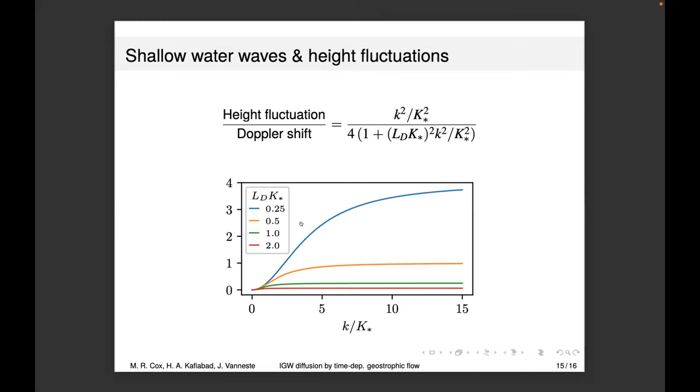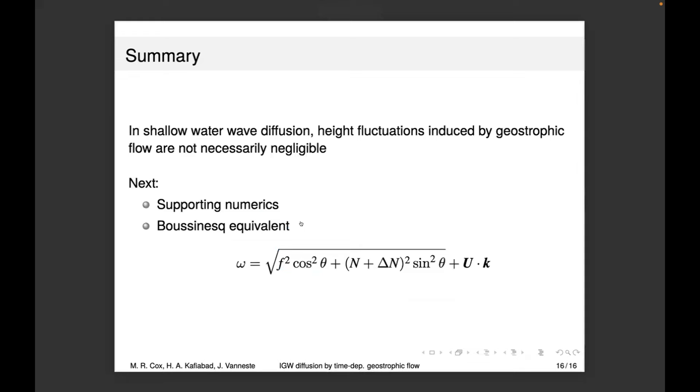The ratio of height fluctuations to Doppler shift terms is about a quarter, meaning the Doppler shift is more dominant but not by orders of magnitude. The height fluctuation term is probably not negligible and needs to be taken into account. At lower values of LD K star, this ratio grows; at higher values, it decays. The key takeaway is that in shallow water wave diffusion, height fluctuations induced by geostrophic flow are not necessarily negligible. We need to rethink the diffusion process and add in the height fluctuation diffusivity term.